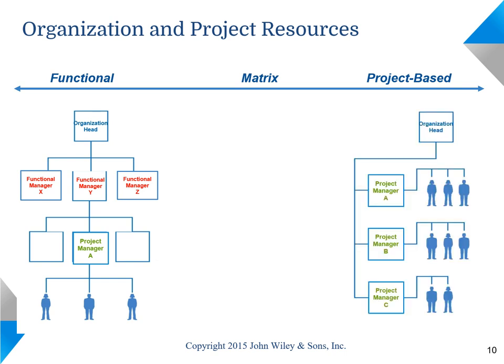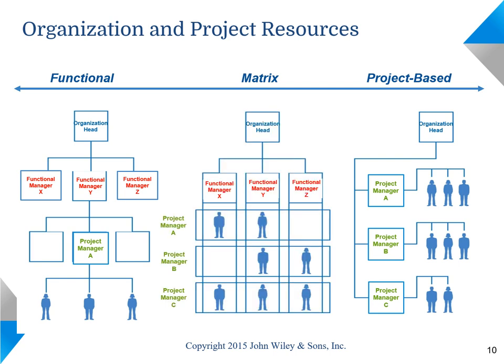On the other end of the spectrum, we have a project-based organization, where project managers report to the head of the organization. Many organizations are somewhere in between as a matrix organization. In this organization, projects are formed across functions, and project managers as well as functional managers report to the organization head.